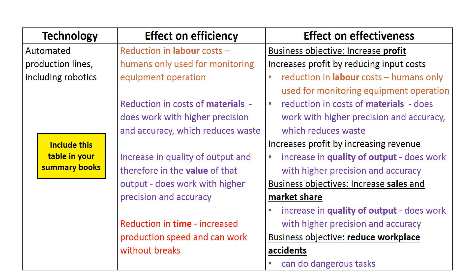Automated production lines and robotics contribute to the objective of increasing sales and market share because they produce higher quality output than human labour. A business that produces higher quality output than its competitors can attract customers from those competitors, increasing sales and market share. They also contribute to reducing workplace injuries by performing dangerous tasks that humans would otherwise do, saving those humans from being injured.